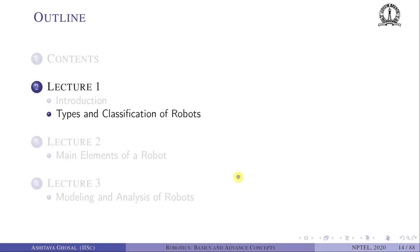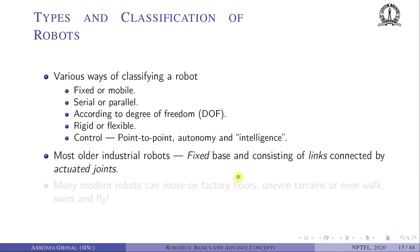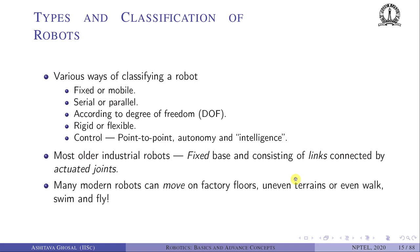Robots can be classified in several ways: fixed or mobile, serial or parallel, by degrees of freedom, rigid or flexible, and by control mode. Most older industrial robots had a fixed base with links connected by actuated joints. Newer mobile robots can transport materials on factory floors, move on uneven terrain, and some can walk, swim, or fly.